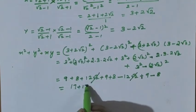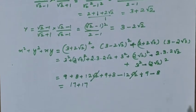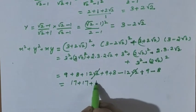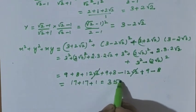So 17 plus 17, plus 9 minus 8. What is the answer? Plus 1. So the total answer is 35.